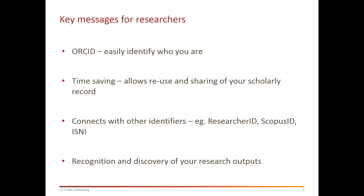The key messages for researchers are: ORCID is all about having an identity that can easily identify who the author is and address the issue of disambiguation - ensuring you're the correct John Smith at your institution that authored a publication. ORCID can stay with researchers throughout their academic life. If they get an ORCID early as a higher degree research student, it can follow them no matter where they go. It also helps with different formats and variants of people's names - if they've changed their name or their name appears differently on different papers, they can still be identified properly.